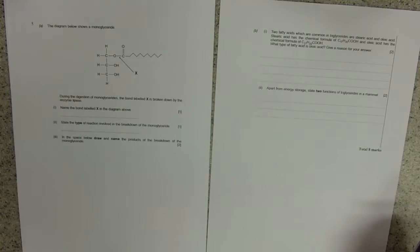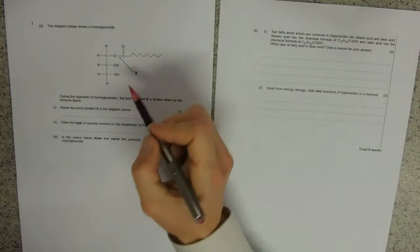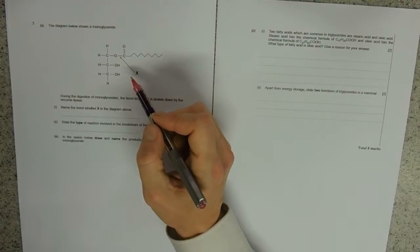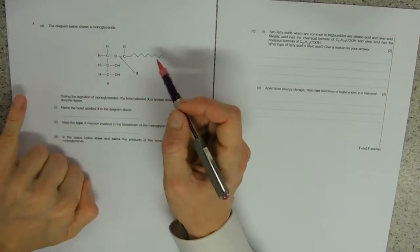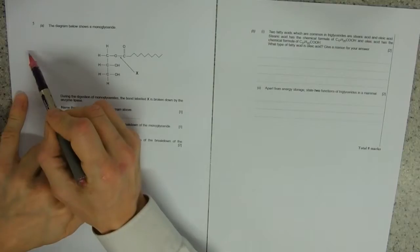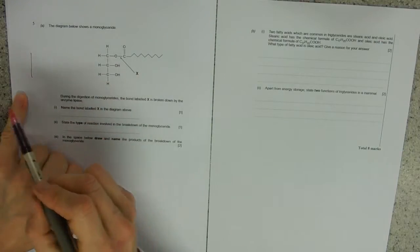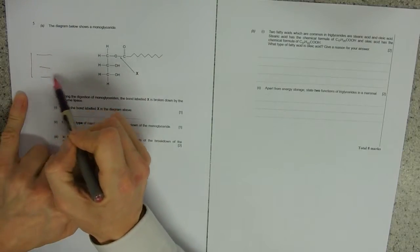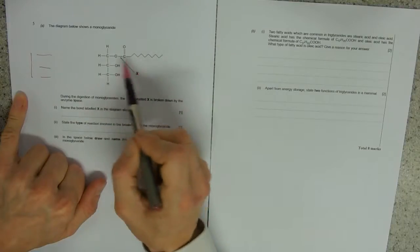So the last question, question 5, is about a monoglyceride. Well, we don't know much about monoglycerides, but we know about triglycerides. A triglyceride will be like this with the glycerol, but it would have three of these fatty acid chains. This one's just got one, that's why it's a mono, but we're okay with that.